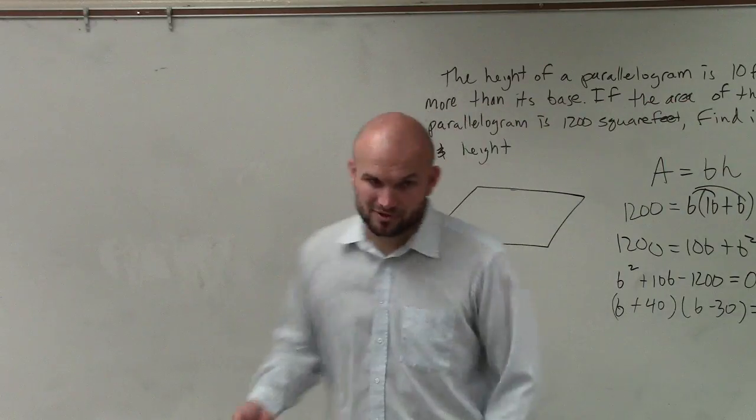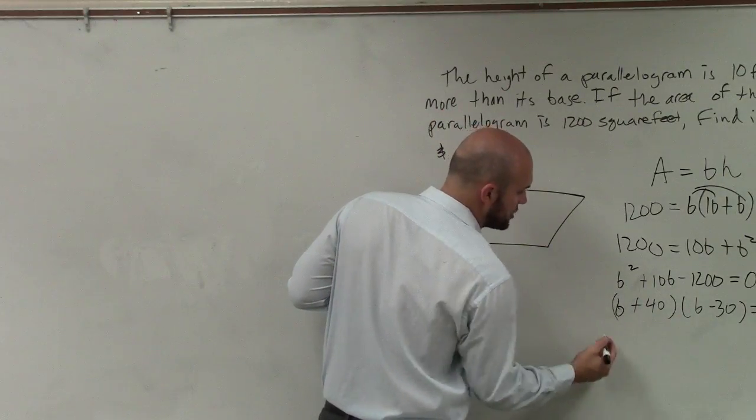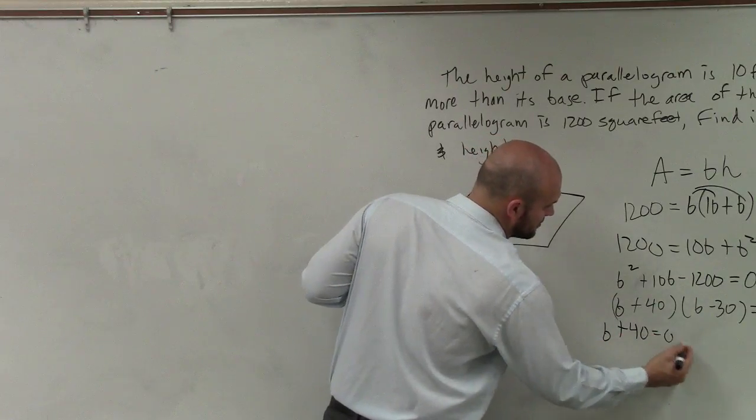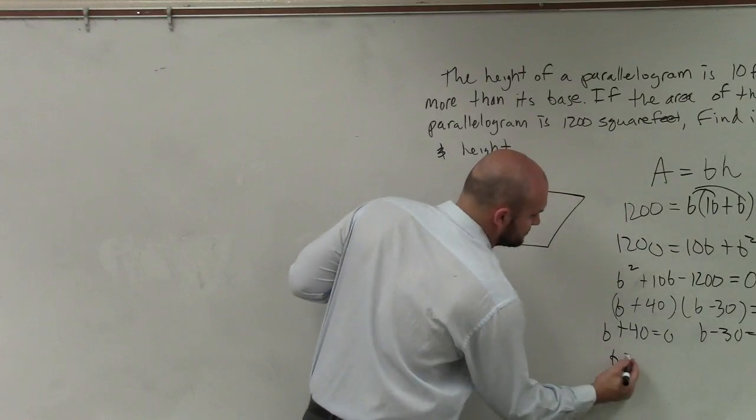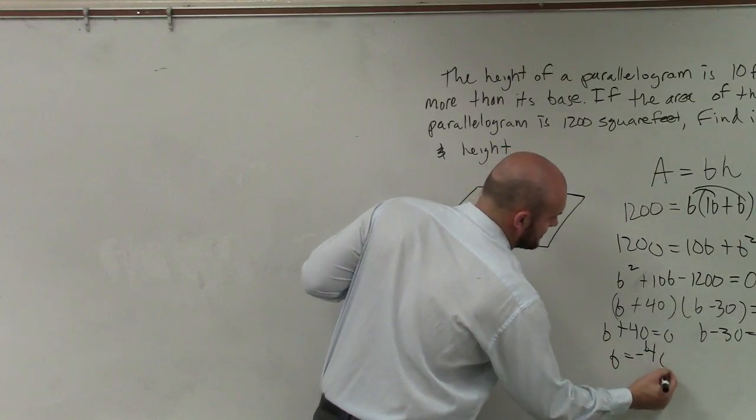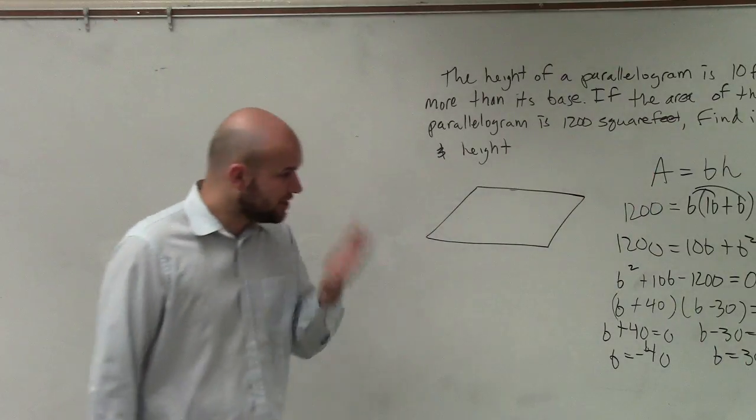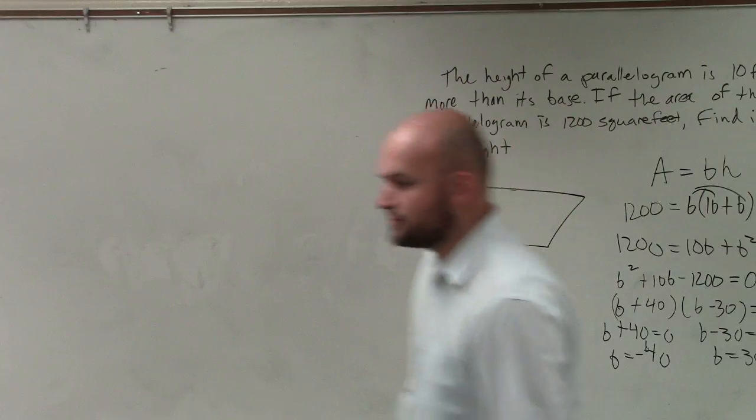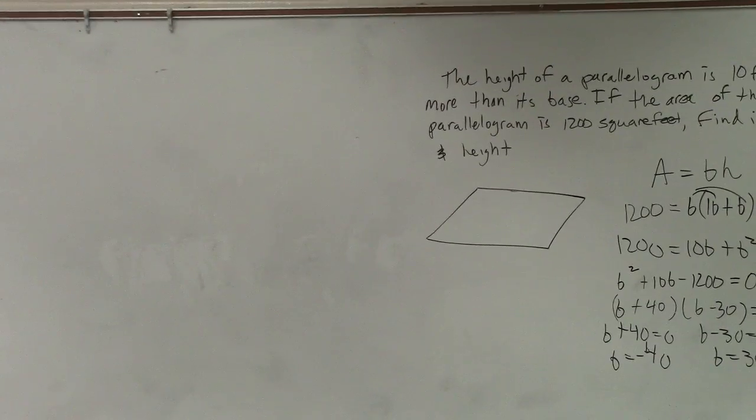This is for an algebra one review. I know it's a little bit extensive. Now you apply your zero product properties. You set them equal to zero. So there's b equals negative 40 and b equals positive 30. Don't worry so much about that one, even though it is a problem.